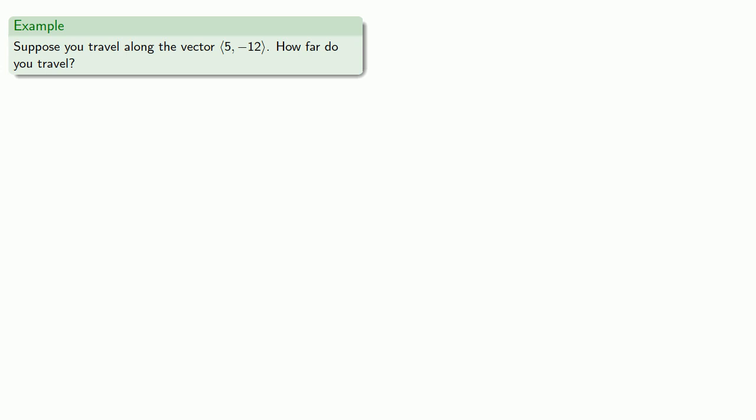For example, suppose I travel along the vector (5, -12), how far do you travel? Now the important idea here is the vector itself tells us to travel 5 units to the right and 12 units downward.